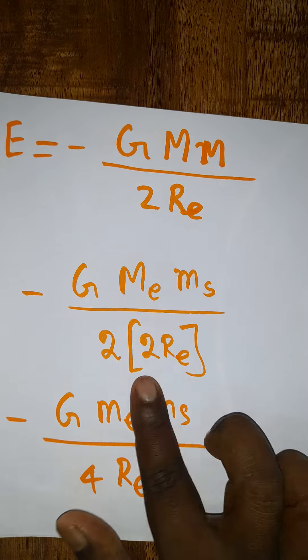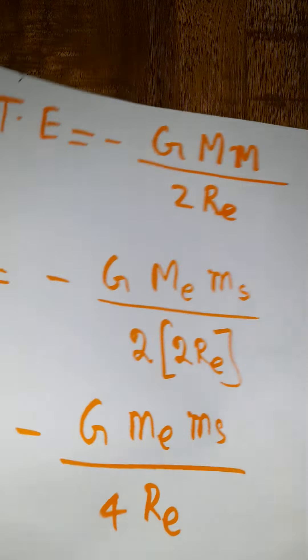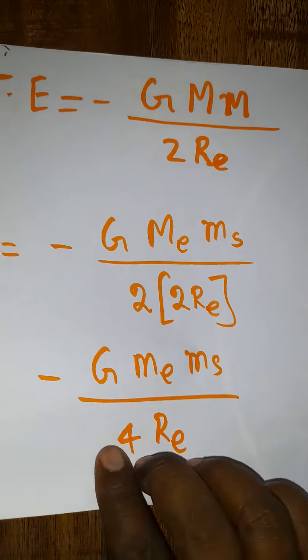Initially, the radius is going to be the orbital radius 2 times Re. I will get the total energy as 4 times Re.